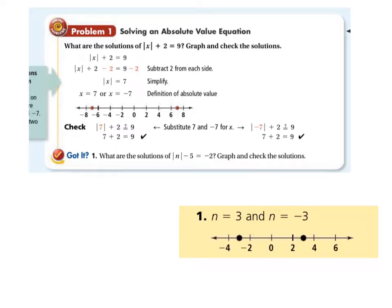Moving on to examples here for section 3-7. What are the solutions of the absolute value of x plus 2 equals 9? Now here's the thing. These are nice for the simple fact you can clean up the outside first. And what I mean by that is obviously subtracting off the 2.